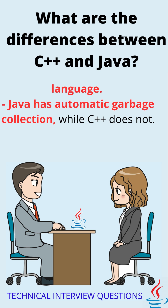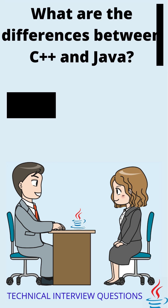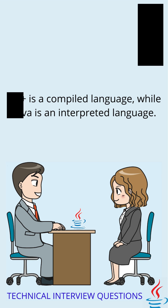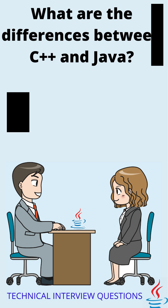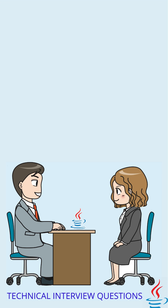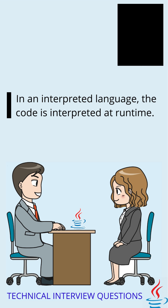Java has automatic garbage collection, while C does not. C is a compiled language, while Java is an interpreted language. In a compiled language, the code is turned into machine code before it's executed. In an interpreted language, the code is interpreted at runtime.